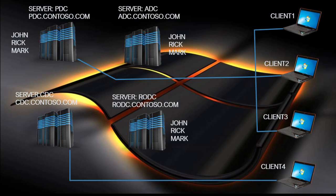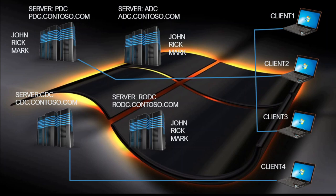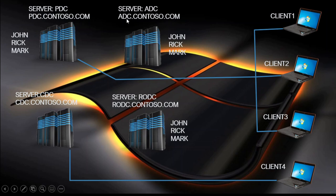Now I will explain this image. You can see the system server PDC — 'PDC' is the hostname of this computer, 'contoso.com' is the domain name, and the full name is PDC.contoso.com, which is the FQDN — Fully Qualified Domain Name. In the next slide I will discuss what is the FQDN, what is the DNS, what is the parent name, what is the hostname, what is the NetBIOS name, and the root level domain.